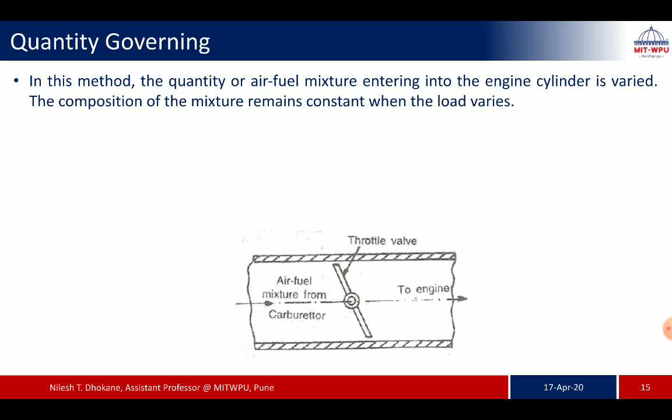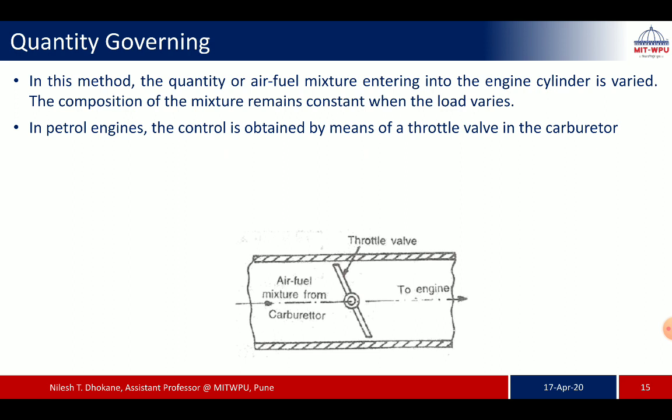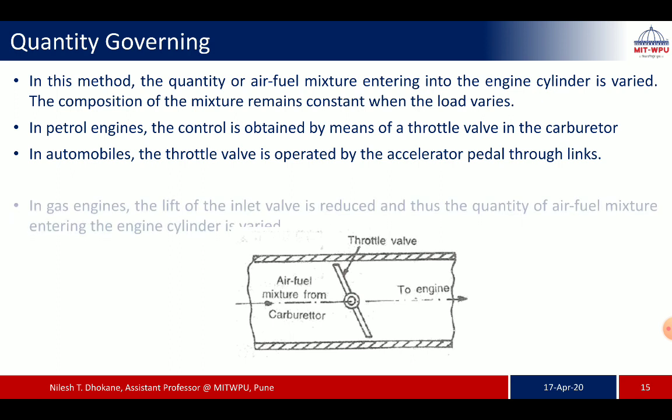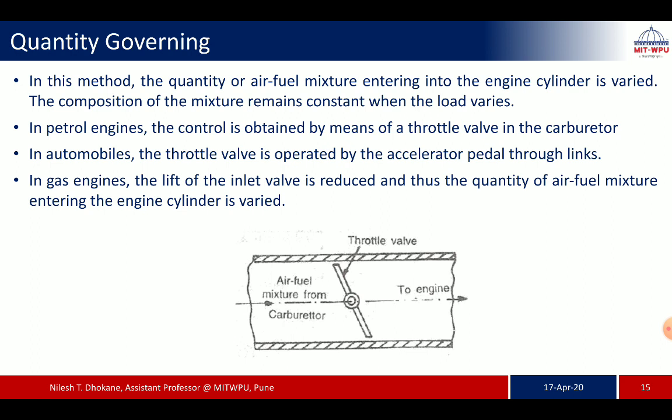In quantity governing, the quantity of air-fuel mixture entering the engine cylinder is varied. The composition of the mixture remains constant — meaning the air-fuel ratio is constant — and only the quantity is varied with the help of the governor by the throttle valve. In petrol engines, control is obtained by means of a throttle valve in the carburetor. In automobiles, the throttle valve is operated by the accelerator pedal through links. In gas engines, the lift of the inlet valve is reduced, thus varying the quantity of air-fuel mixture entering the cylinder.